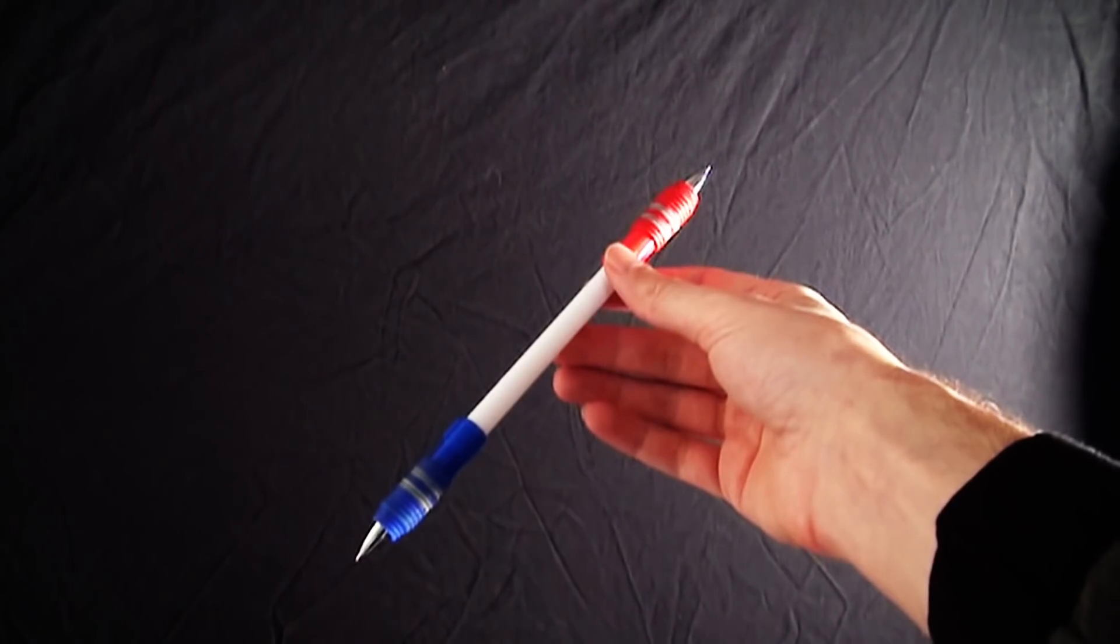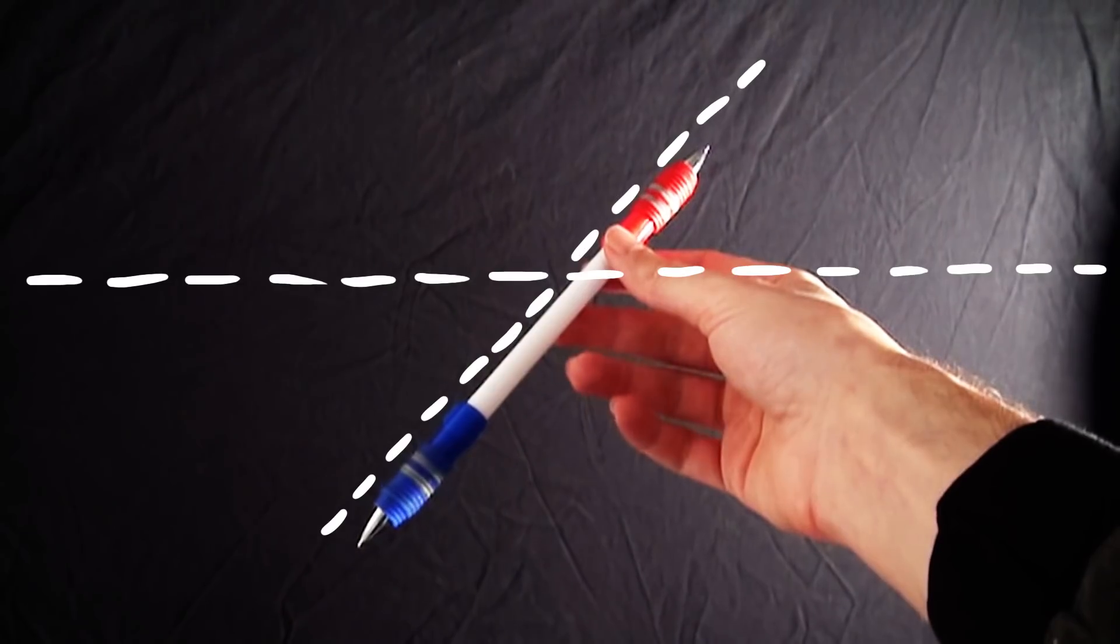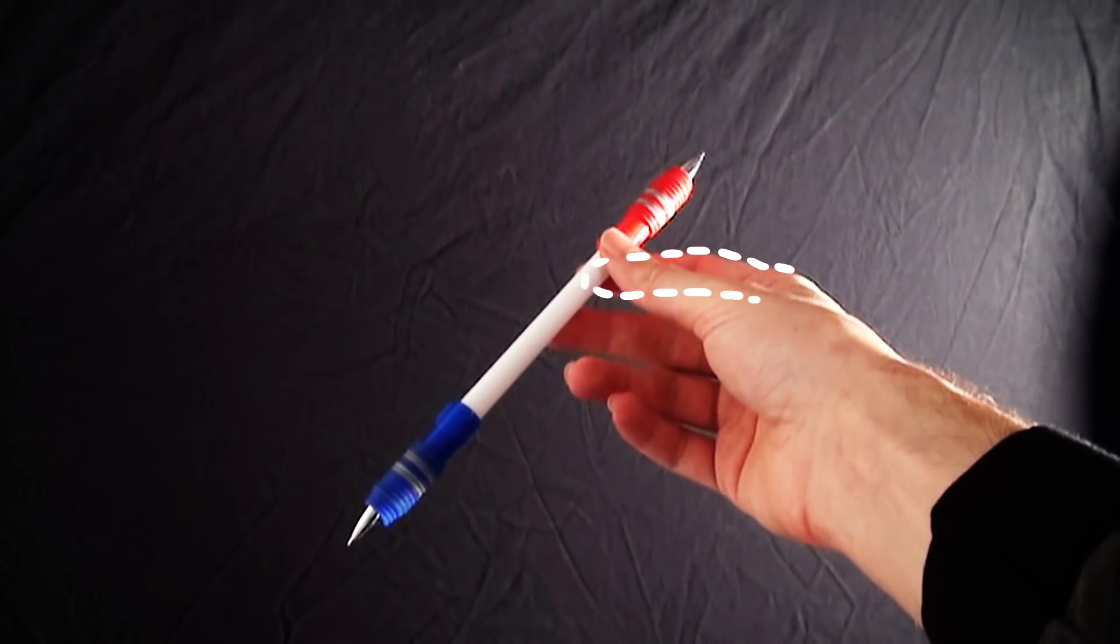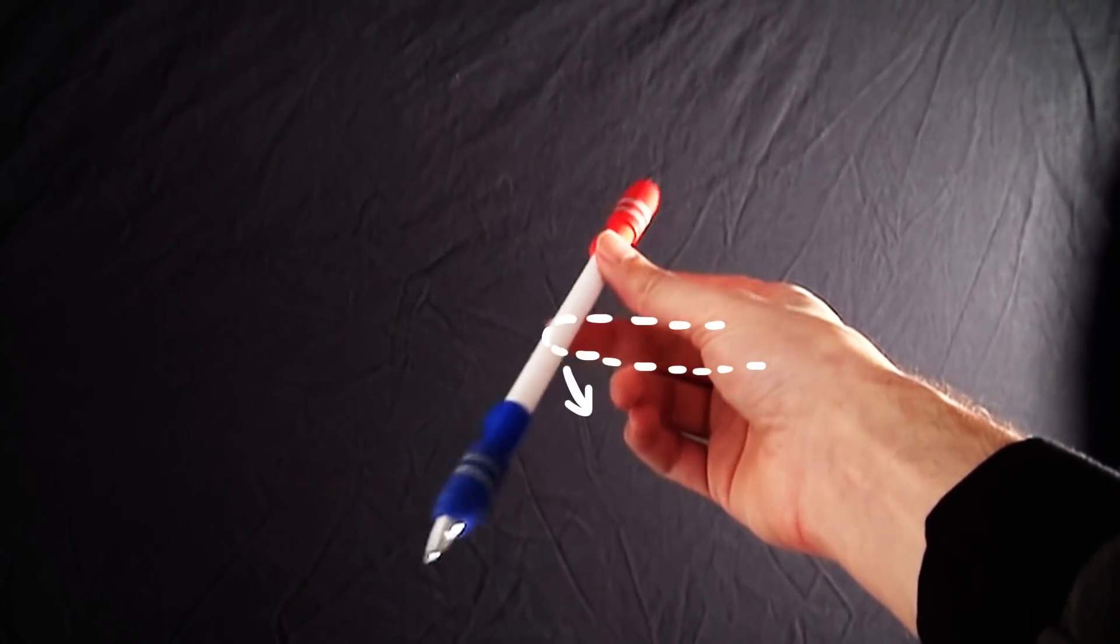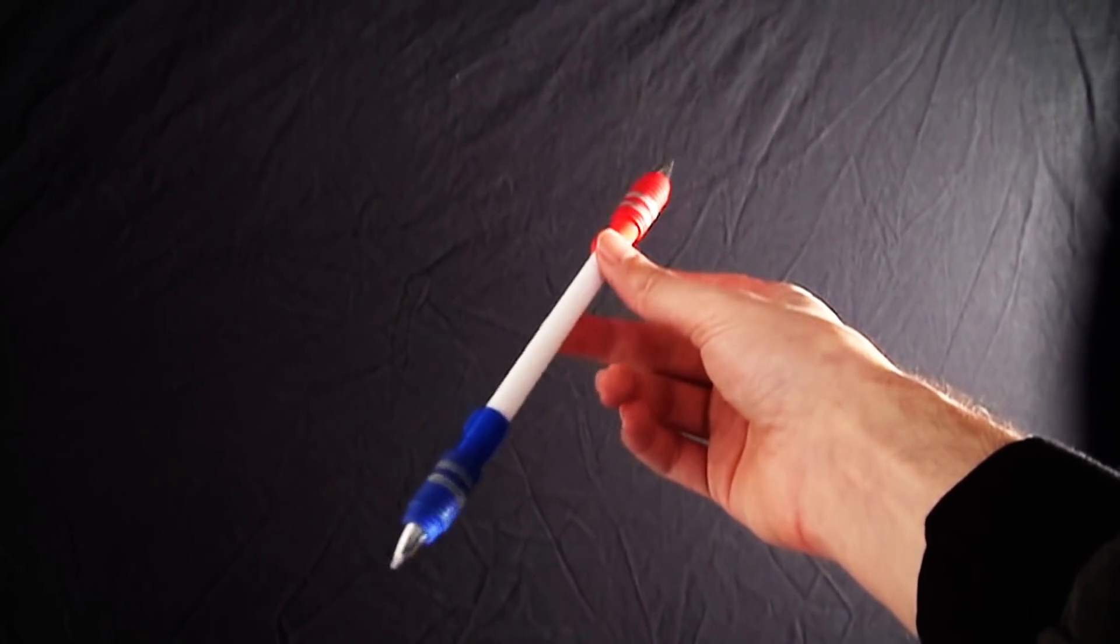Then make sure your hand and wrist is kind of straight, while the pen is pointing diagonally. Then you just have to release the pen by removing the index finger and at the same time push it with the middle finger. Not hard, just enough to give it a push, but also not too weak.